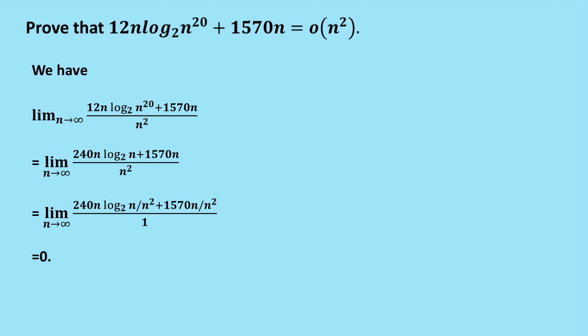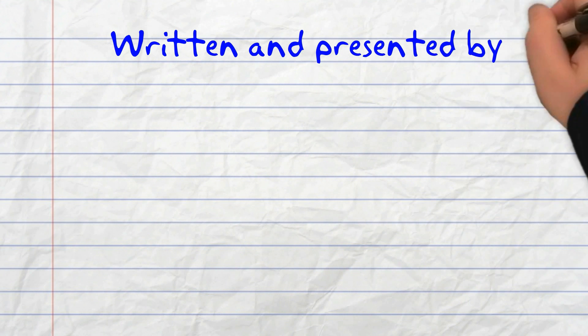Anyway, we've shown that the limit equals 0, and so now we can conclude that 12n log_2(n^20) + 1570n equals small o of n^2. That should give you full marks. That's it for small O notation made easy. I hope you found it useful.